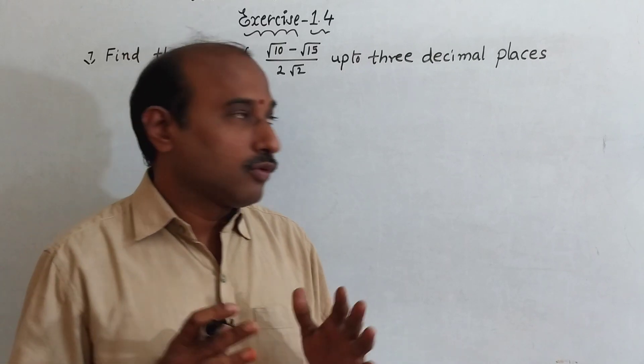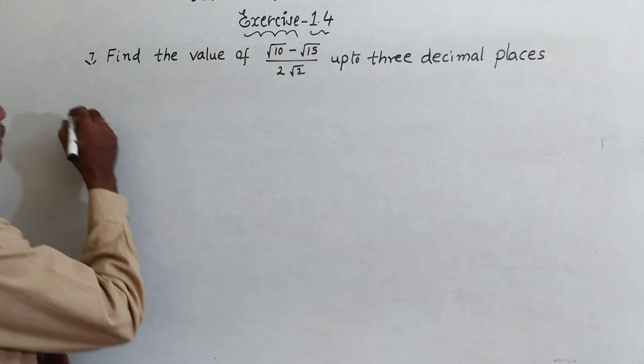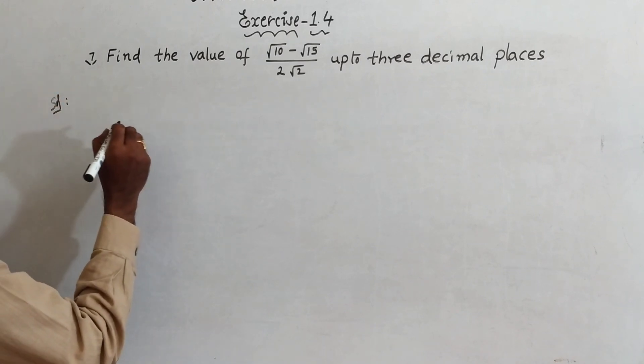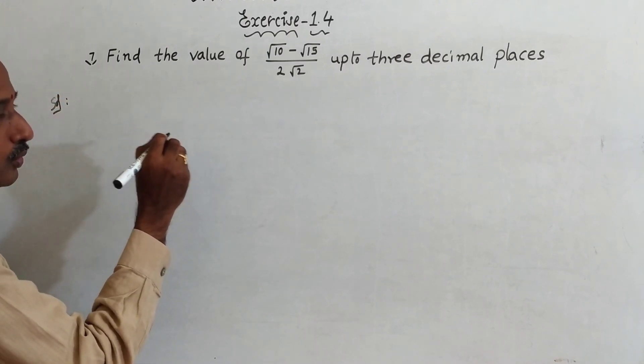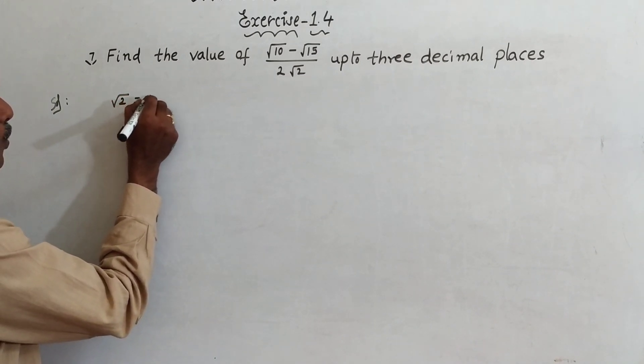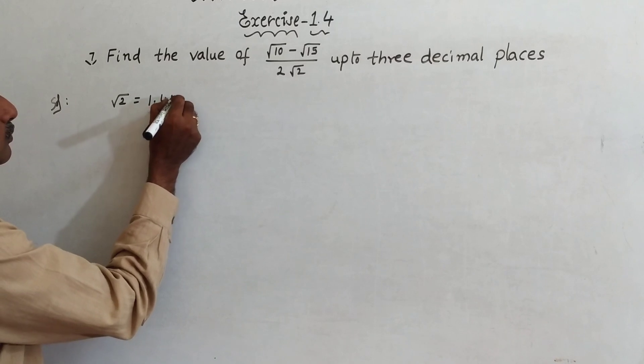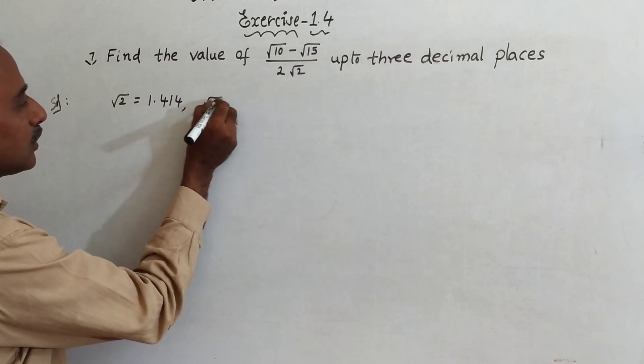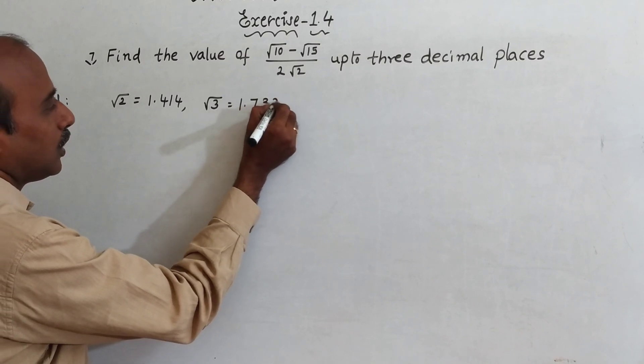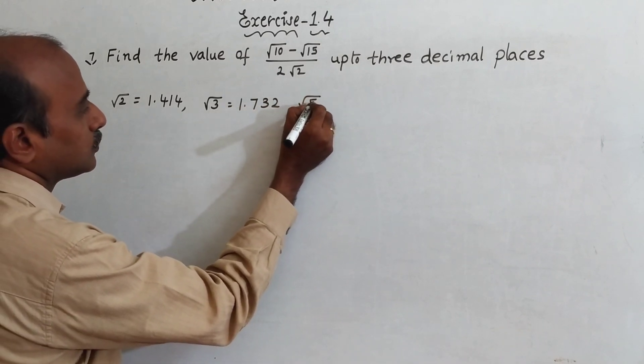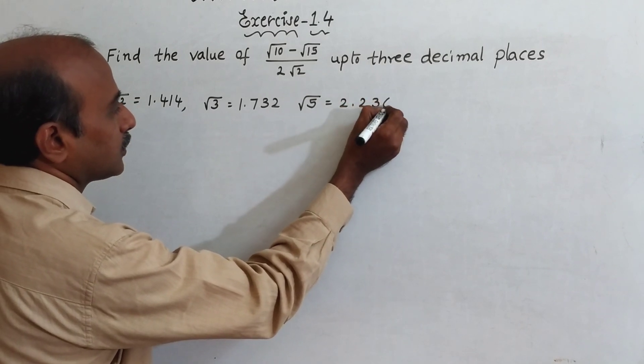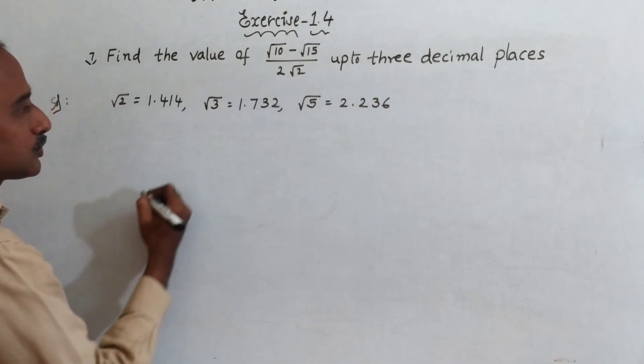Now we will come to the solution. Here we should know the values of root 2, root 3, and root 5. So root 2 is equal to 1.414, root 3 is equal to 1.732, root 5 is equal to 2.236. These values you should know.